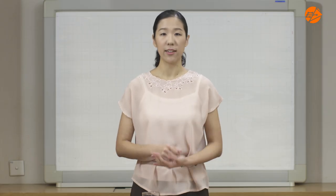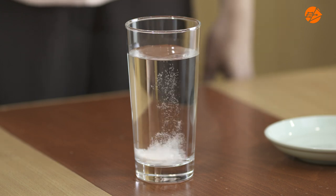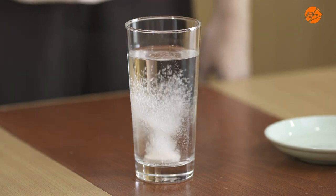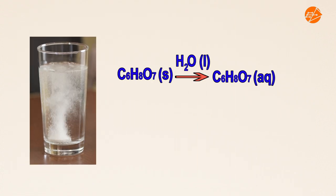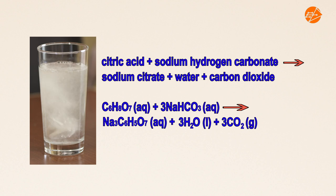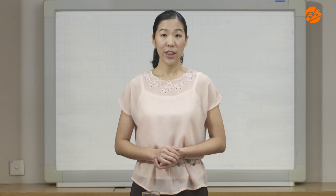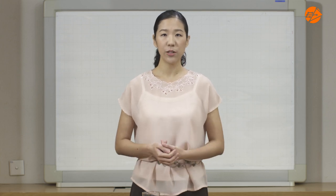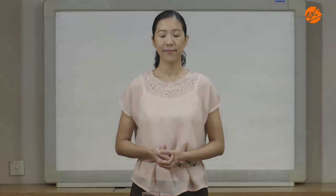So let's put this all together. When we add the tablet to water, the ingredients dissolve. For example, solid citric acid dissolves to form aqueous citric acid, and solid sodium hydrogen carbonate dissolves to form aqueous sodium hydrogen carbonate. Next, the ingredients in the tablet react with each other. The key reaction is between aqueous citric acid and sodium hydrogen carbonate to produce sodium citrate, water and carbon dioxide gas. The formation of carbon dioxide gas produces bubbles, or the effervescence that we can see.